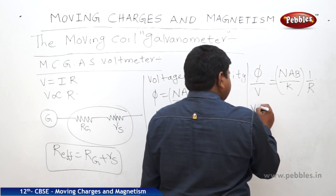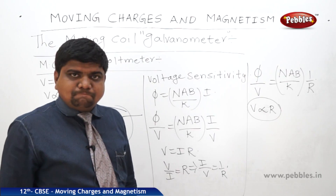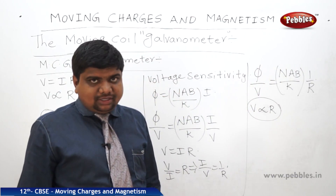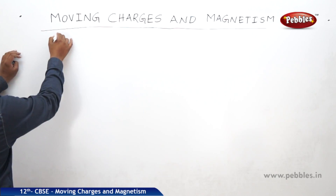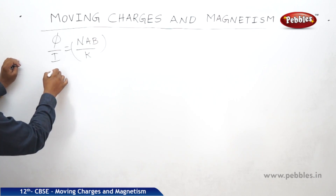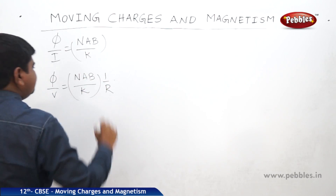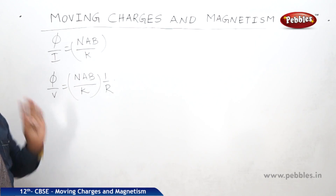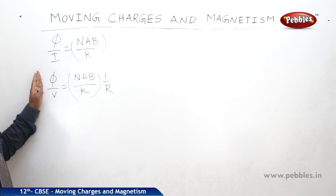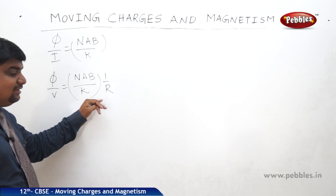From this expression, voltage sensitivity is inversely proportional to resistance. If resistance is more, voltage sensitivity is less. Since V is proportional to R, φ/V is inversely proportional to R. So current sensitivity φ/I = NAB/K, and voltage sensitivity φ/V = NAB/(K·R). If N becomes 2N and R becomes 2R, there will be no change in either sensitivity.